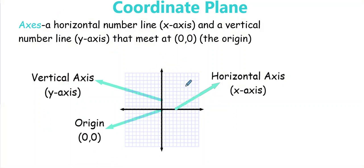On your notes page these things have been kind of written out for you. This line here that is horizontal — this is my horizontal axis, or my x-axis. The one that goes up and down, or vertical — that is my y-axis. And where they come together, that is called the origin. That's where we're always going to start.